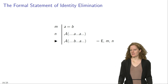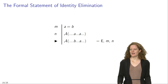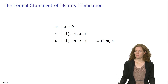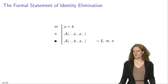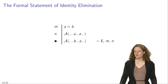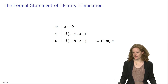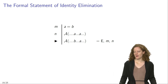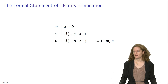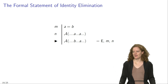Formally, this rule looks as follows. If in line M of your proof you have the identity statement A equals B, and in line N of your proof you have a sentence that ascribes a property to A — so A has the property of being F in this case — you can then infer that B has the very same property, and justify this inference by means of identity elimination applied to lines M and N.